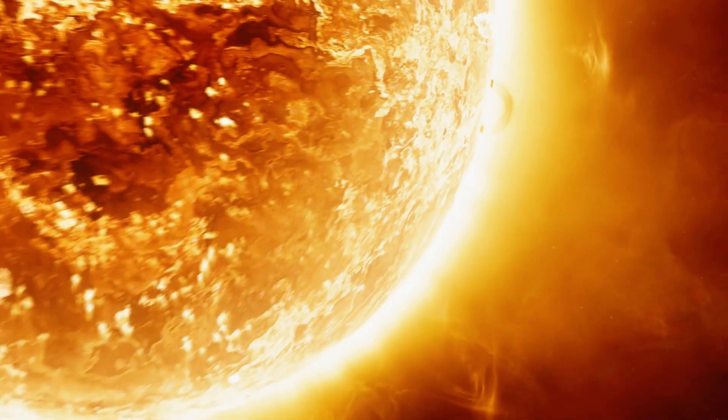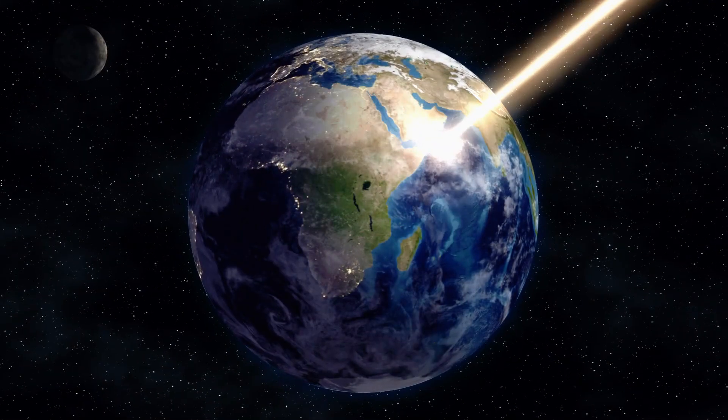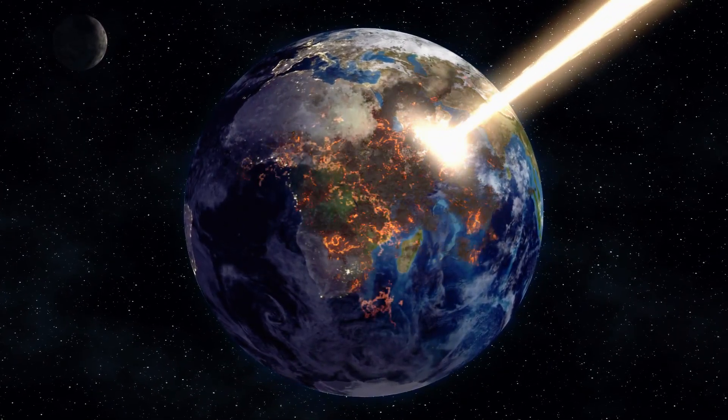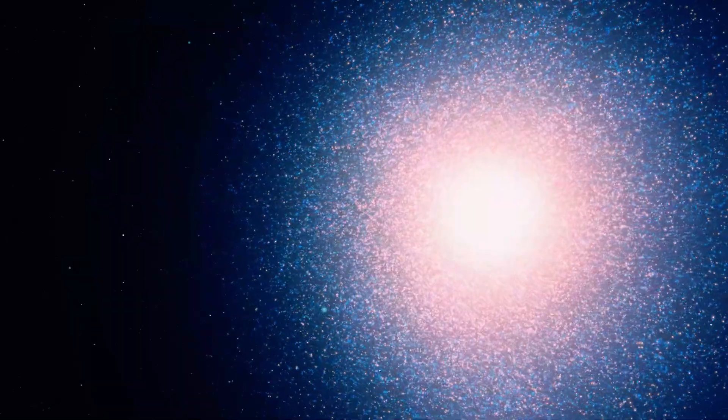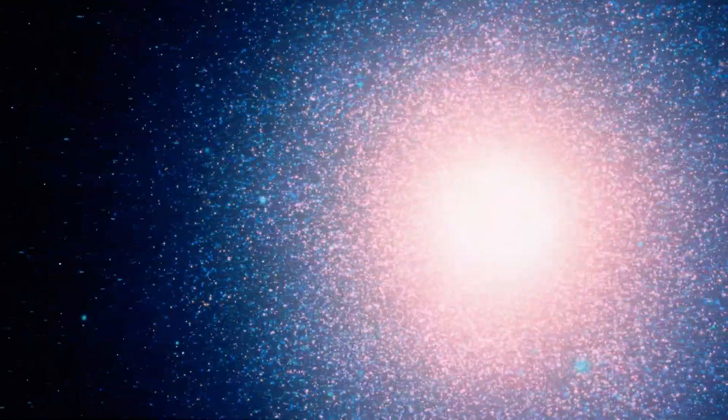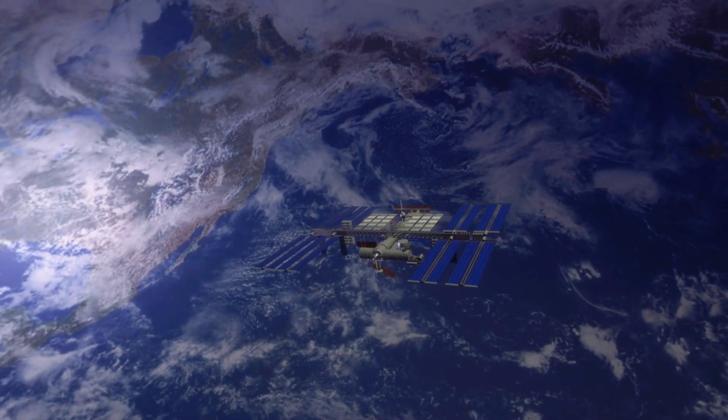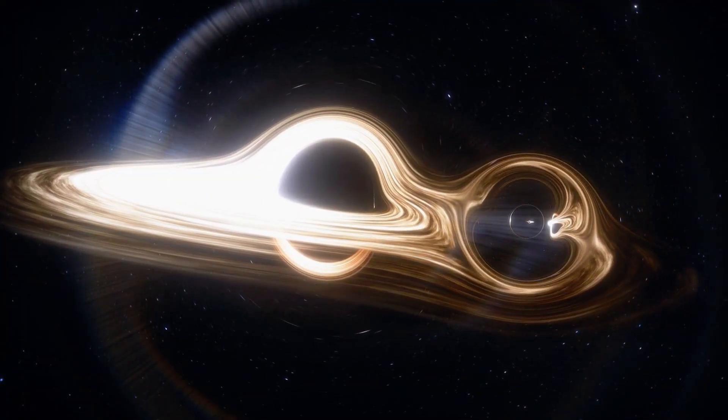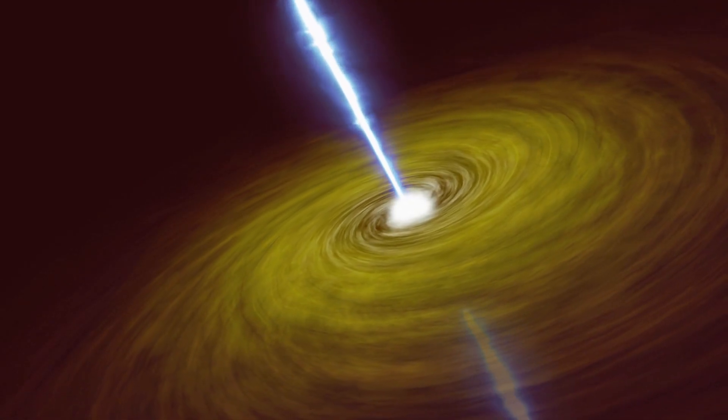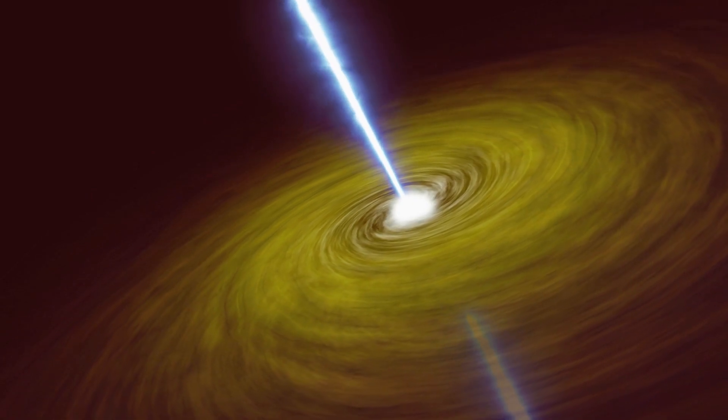Thankfully, Betelgeuse is too far away to cause direct harm. If a supernova occurred within 50 light-years, the blast of radiation could strip away Earth's ozone layer, exposing us to deadly space radiation. While Betelgeuse is at a safe distance, its explosion will still send a wave of cosmic particles our way, possibly disrupting satellites and affecting Earth's atmosphere. This only adds to the unpredictability of space, reminding us how cosmic events can have far-reaching effects, even from vast distances.